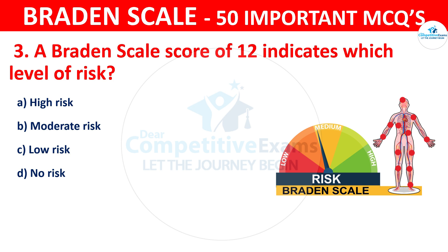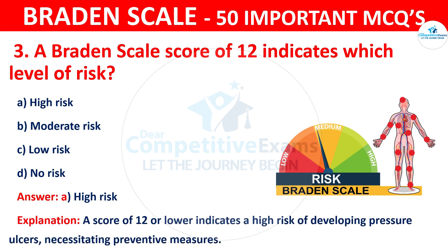The correct answer is A — high risk. A score of 12 or lower indicates a high risk of developing pressure ulcers, necessitating preventive measures.